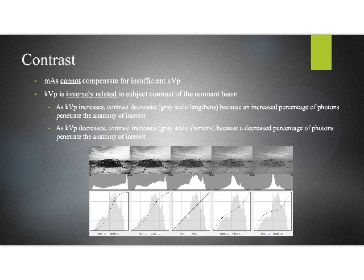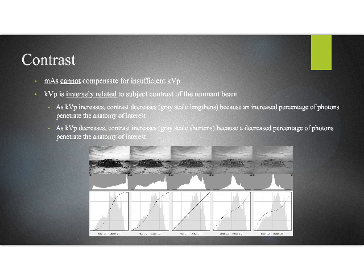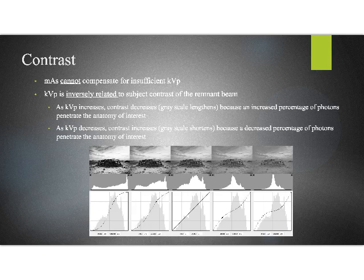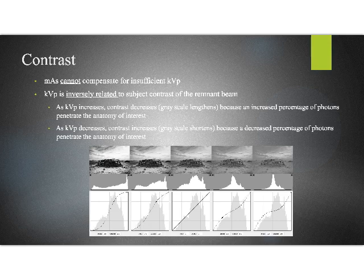But what's interesting is KVP is inversely related to subject contrast in the remnant beam. That means that as I increase my KVP, contrast decreases. You can think about that as grayscale lengthens. But the reason it happens is because there's an increased percentage of photons that are passing through the patient's body.